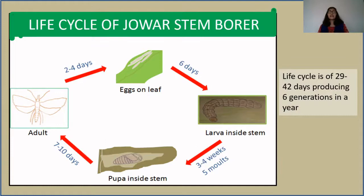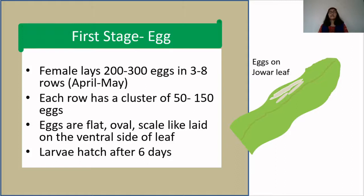After 7 to 10 days, the adult emerges. Now let us study each stage in detail. The first stage is the egg stage. The female lays 200 to 300 eggs in 3 to 8 rows, with each row containing a cluster of 50 to 150 eggs. Eggs are flat, oval, scale-like, and laid on the ventral side of the leaves. Larvae hatch after 6 days.